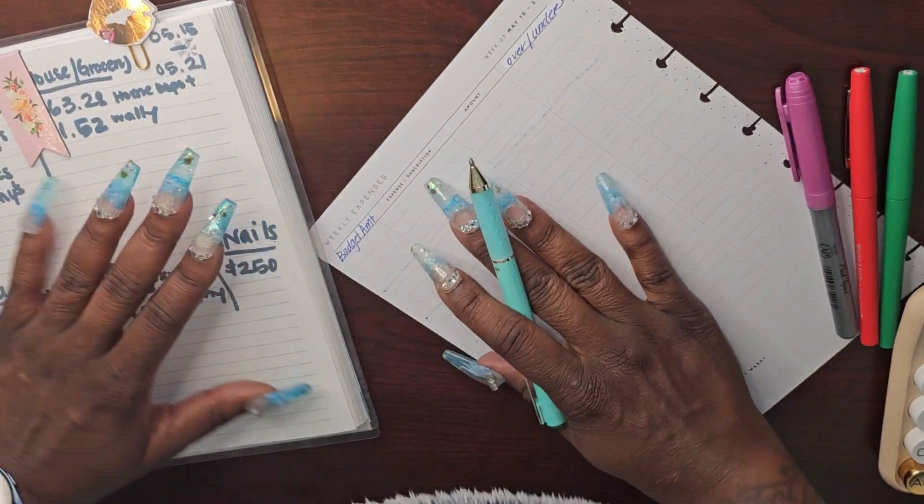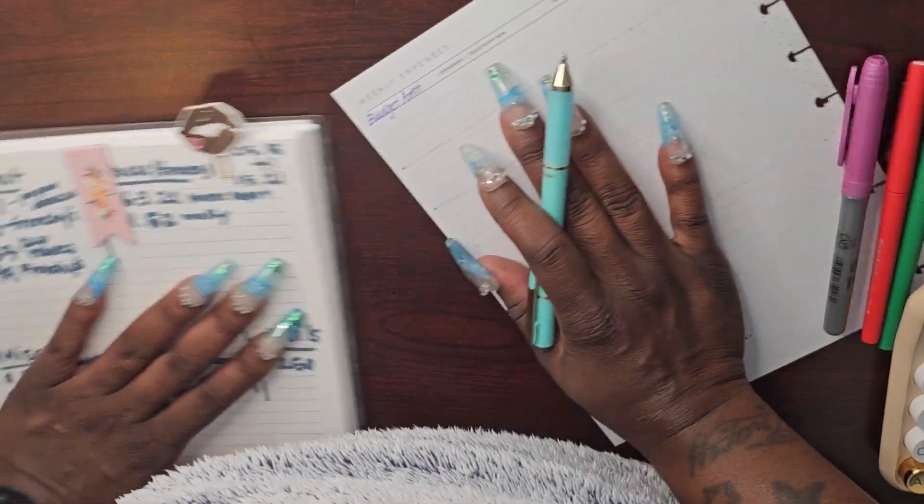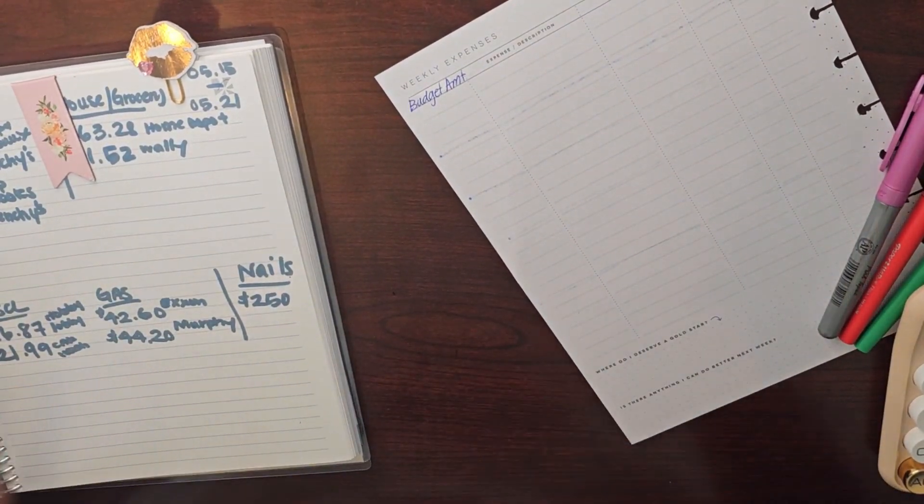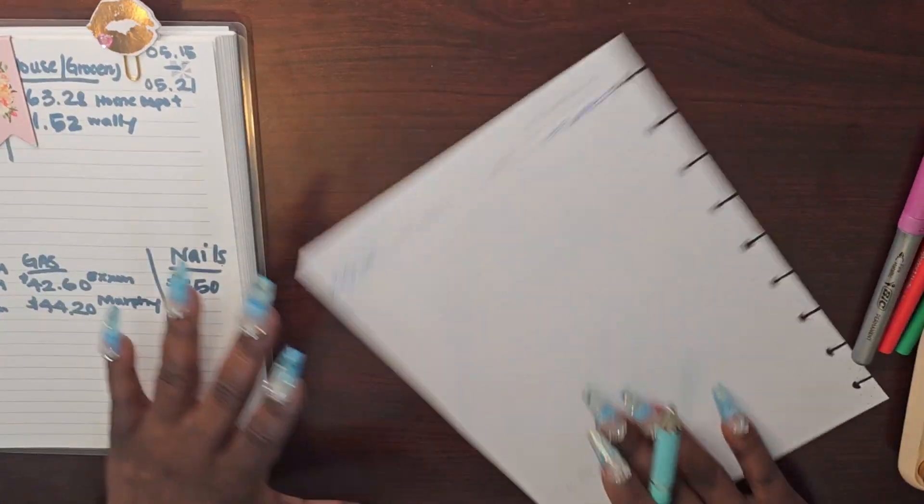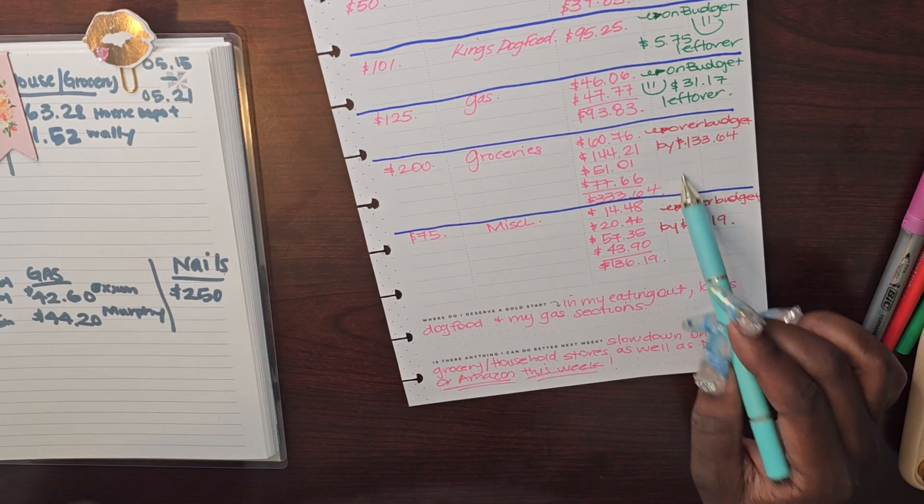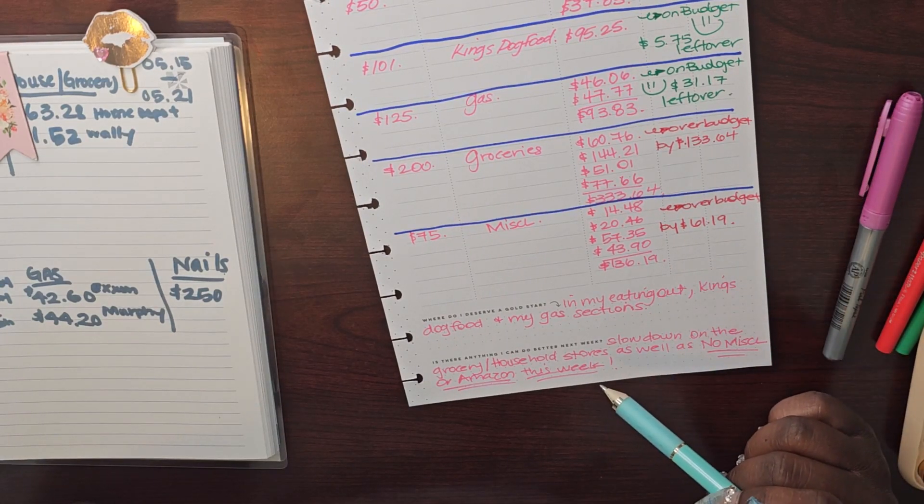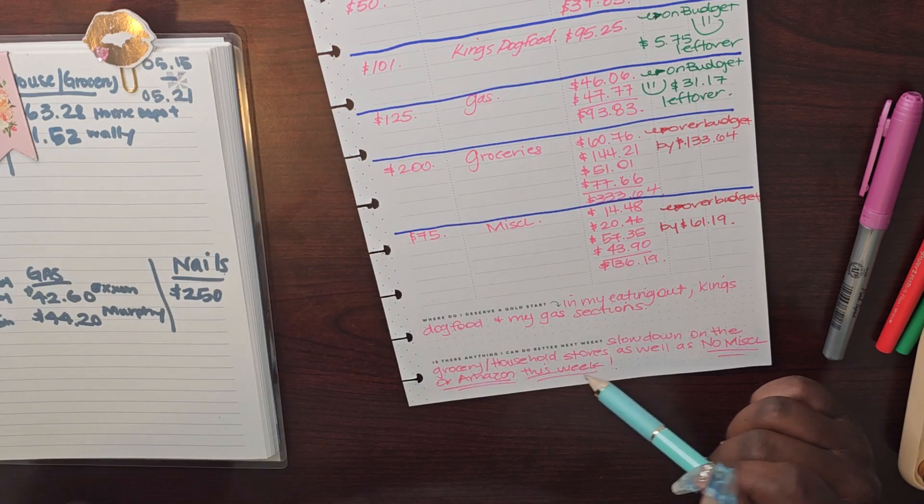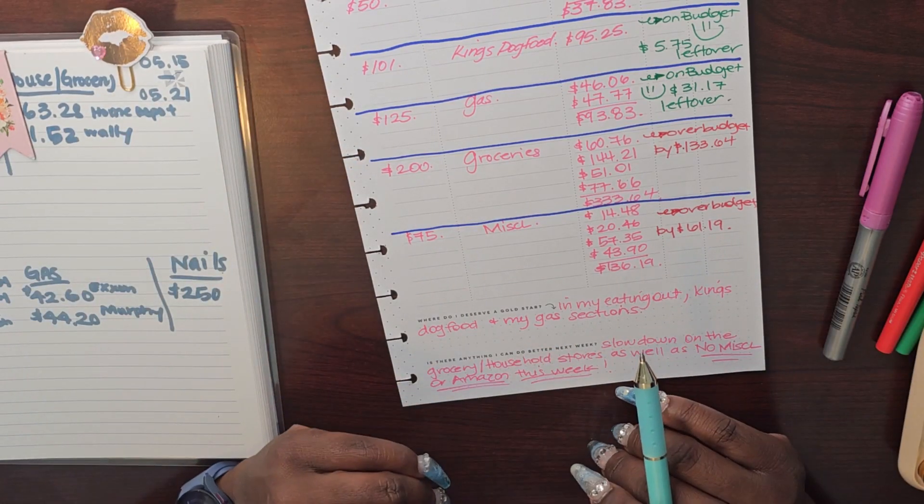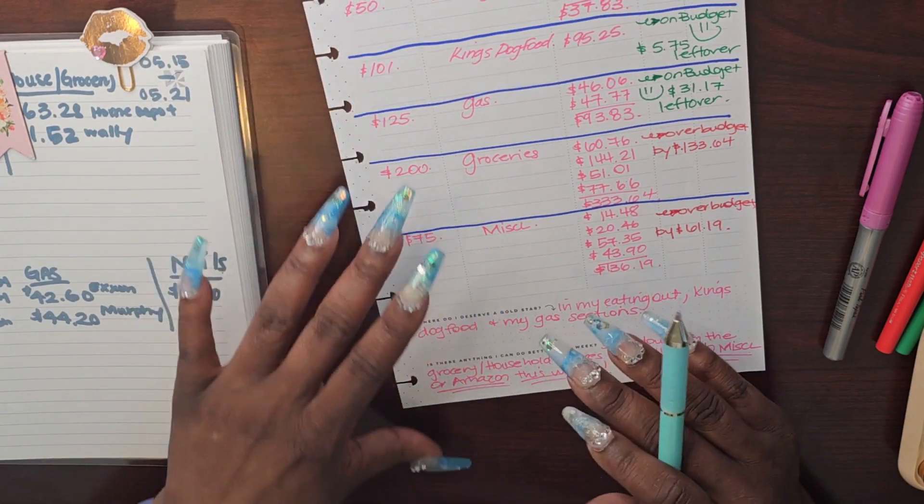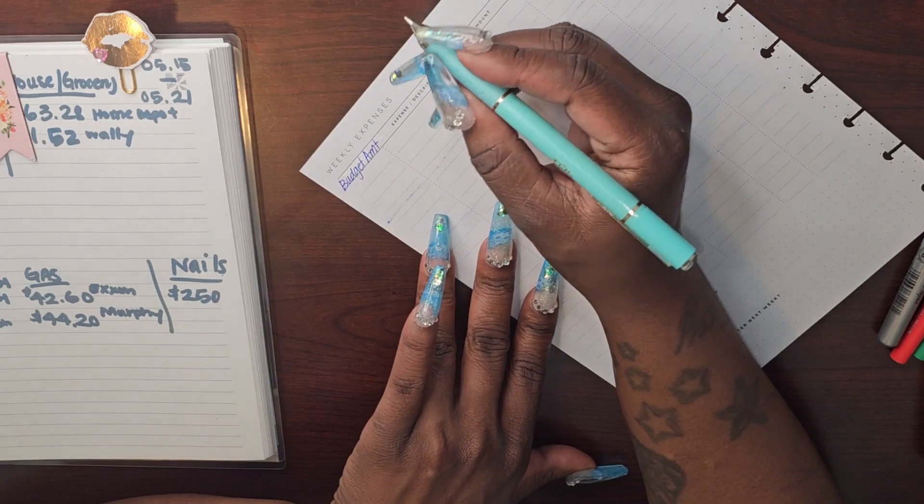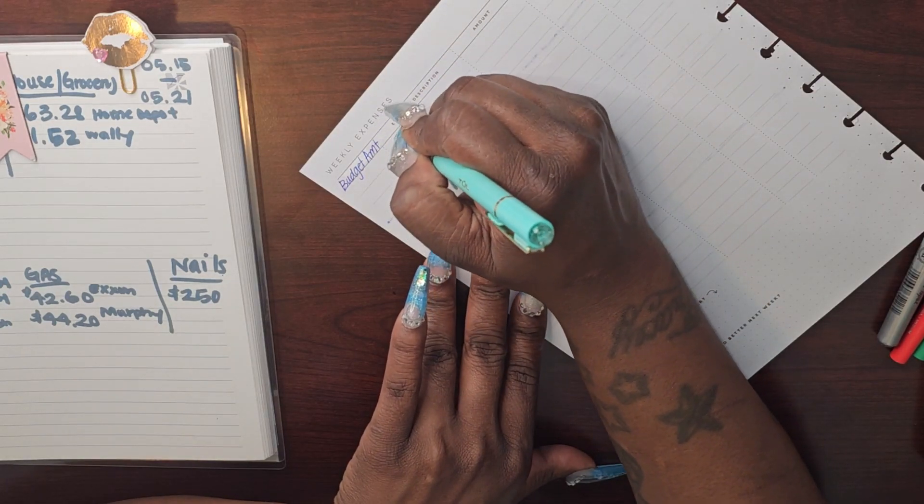All right. So let's talk about it y'all. Now first things first, I got my transaction log, what I had going on over here. So y'all can see your girl been doing a little something, something now. Let's talk about last week though. What did we do last week? Okay. So we were pretty good last week except for we were over in our grocery section and we were over in our miscellaneous section. All right. Now we were doing pretty good and eating out King's dog food. The gas budget was okay, but that groceries and that miscellaneous. My God, I can tell you for a fact, I'm going to be okay in my grocery section this time for sure. But we shall see.